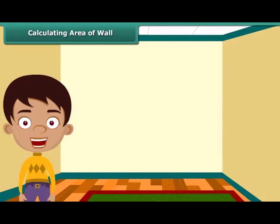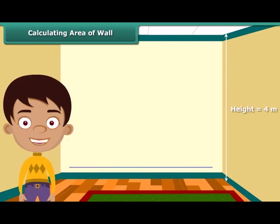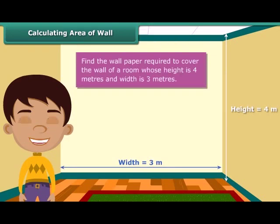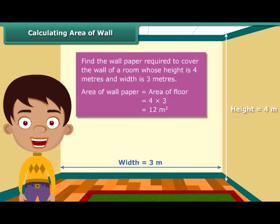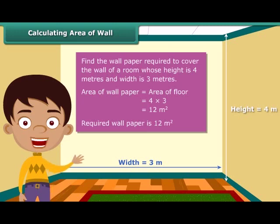Now that we know how to calculate area, let us solve a question based on the concept. Each wall of Nidhi's room is 4 meters high and 3 meters wide. She wants to cover one of the walls with wallpaper and wants to know how many square meters of wallpaper will be required. The area of the wallpaper required will be the same as the area of the wall. The area of the wall is 4 meters multiplied by 3 meters, which is 12 square meters. So, 12 square meters of wallpaper will be required to cover the wall of Nidhi's room.